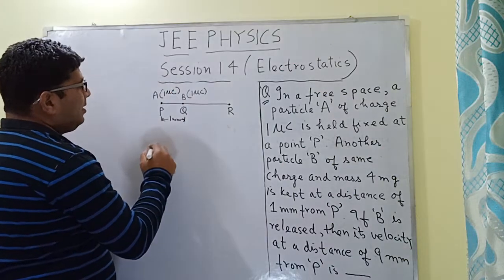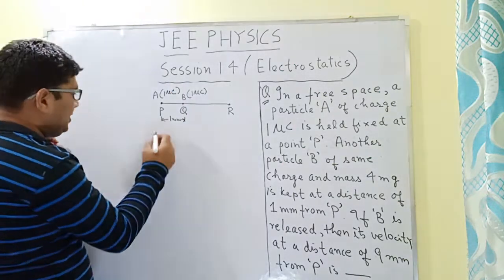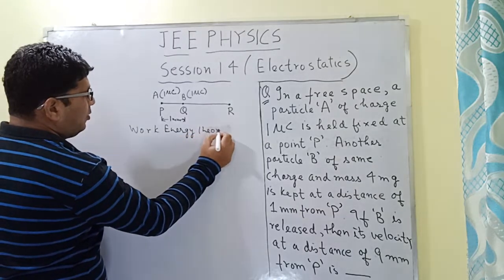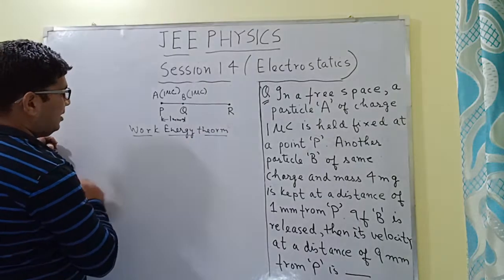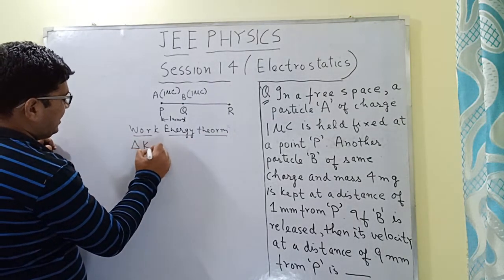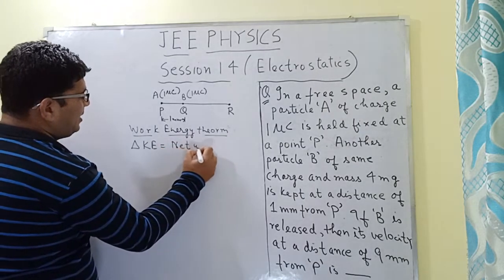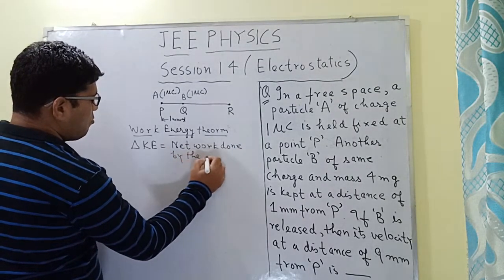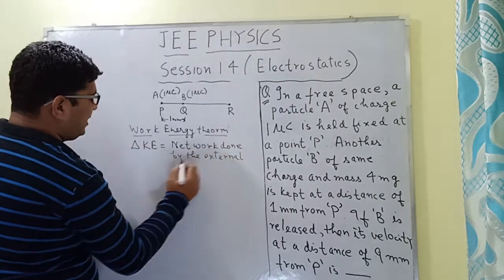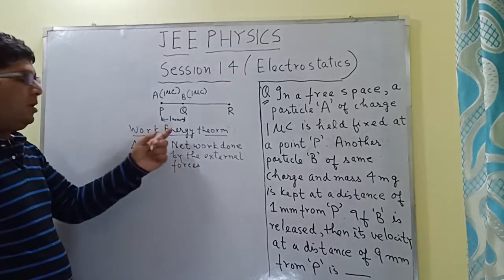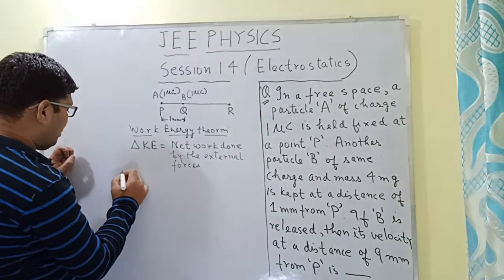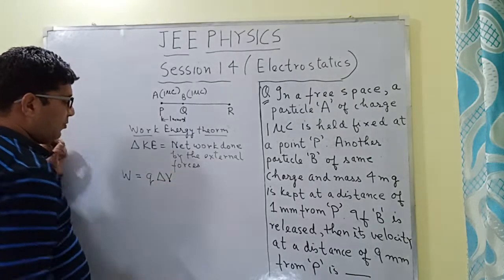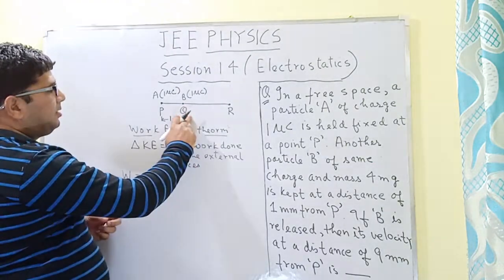We will be applying the concept of the work-energy theorem. The change in kinetic energy is equal to the net work done by the external forces. The work done in this case will also be equal to Q·ΔV, where ΔV is the difference in potential between points Q and R.